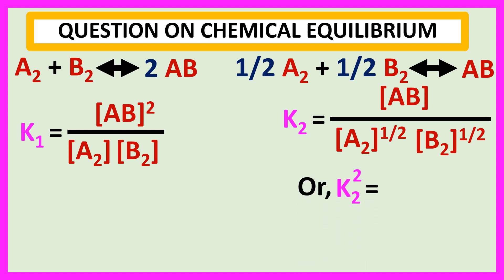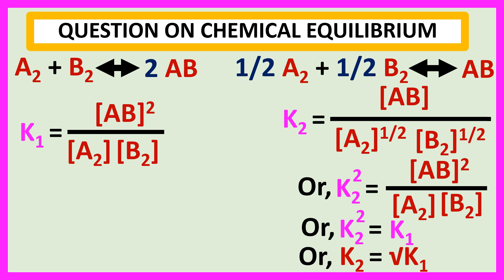K2 squared equals concentration of AB squared over concentration of A2 times B2, which equals K1. Therefore, K2 equals root K1.